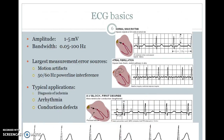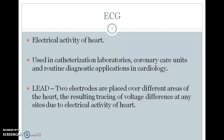ECG has some large measurement error sources, and motion artifacts are the main limiting factor. Typical applications include arrhythmia detection and conduction defect analysis. The amplitude can be measured between 1 to 5 millivolts, and the bandwidth is 0.05 to 100 Hz. ECG waveforms include normal sinus rhythm, atrial fibrillation, and AV block. ECG is mainly used for electrical activity related to heart sounds, and also in catheterization laboratories, coronary care units, and routine diagnostic applications in cardiology.